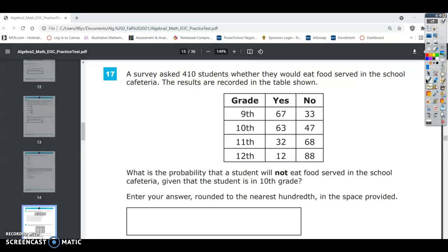Algebra 2 EOC practice test number 17. A survey asked 410 students whether they would eat food served in the school cafeteria. The results are reported in the table shown.